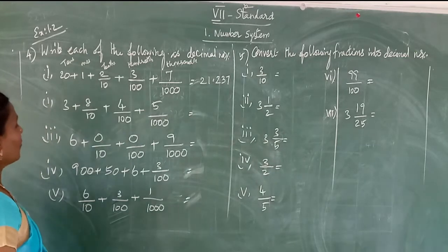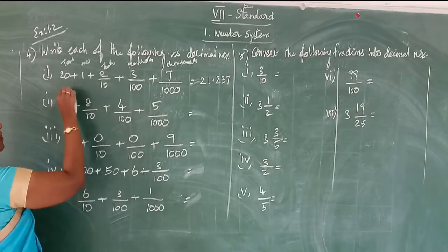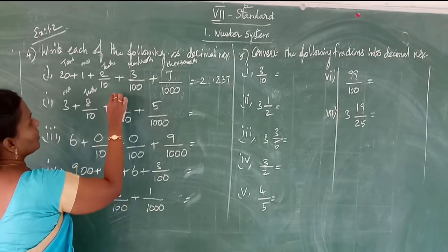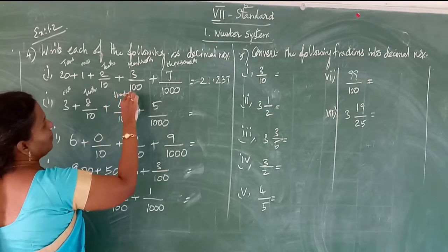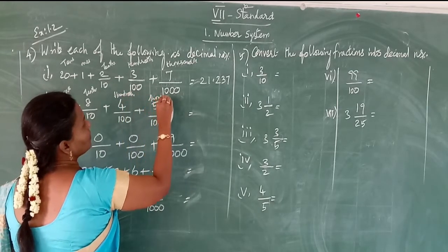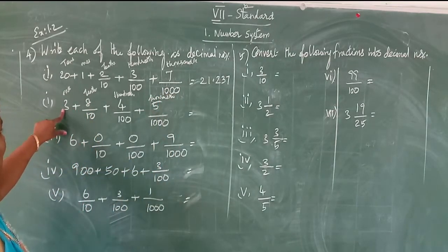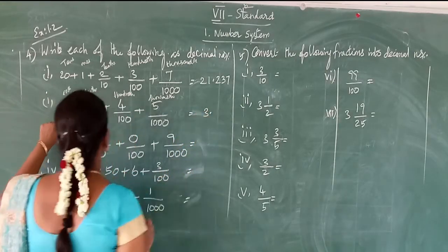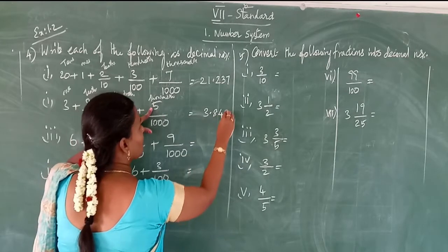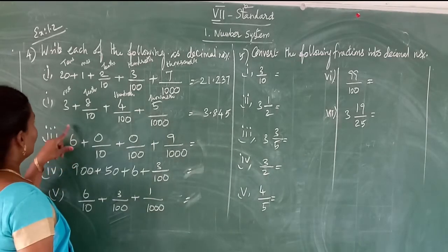See the next one in expanded form. The whole part is 3, so only the ones space. In the decimal part: the tenths place has 8, the hundredths place has 4, and the thousandths place has 5. So 3.845.